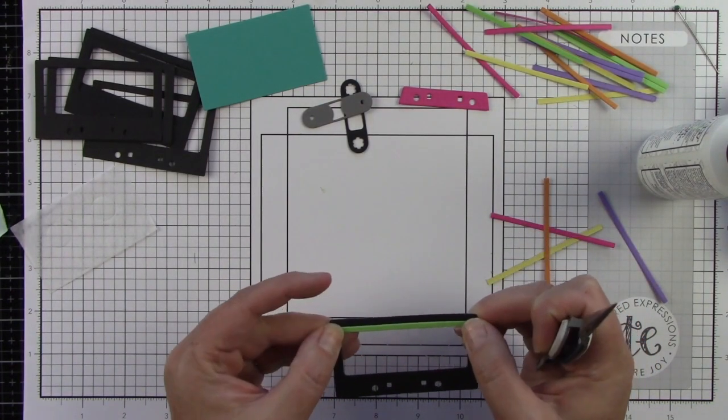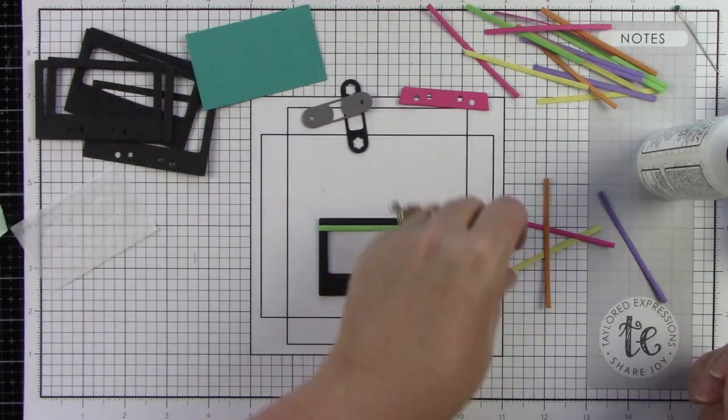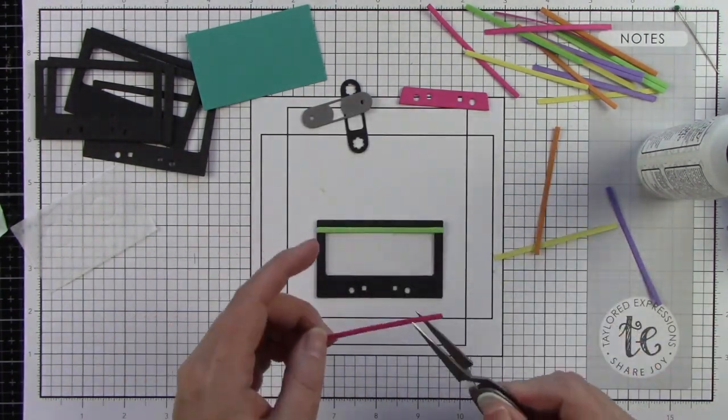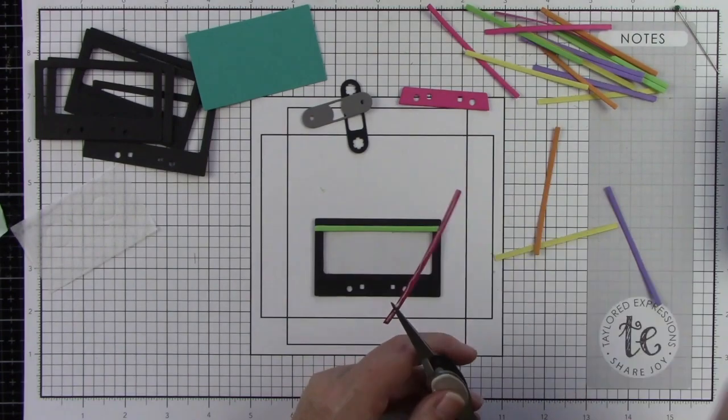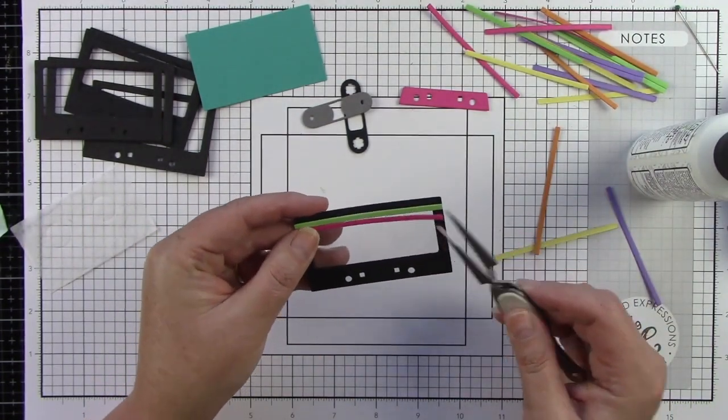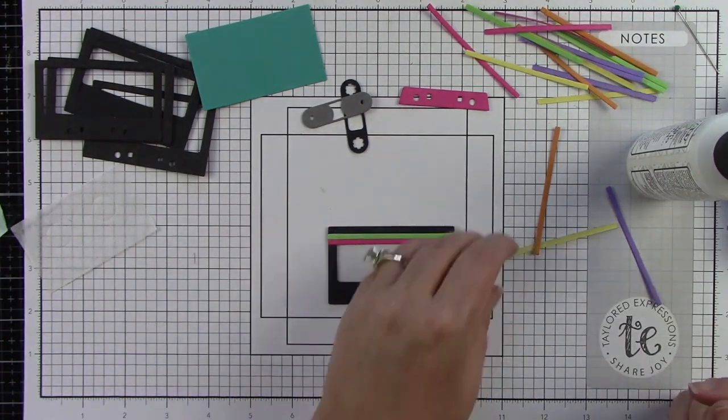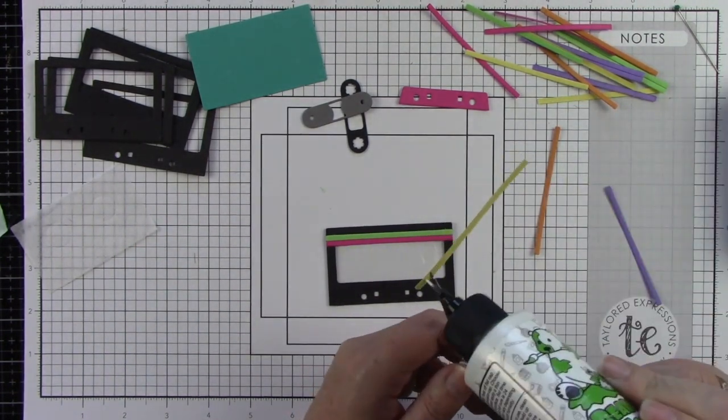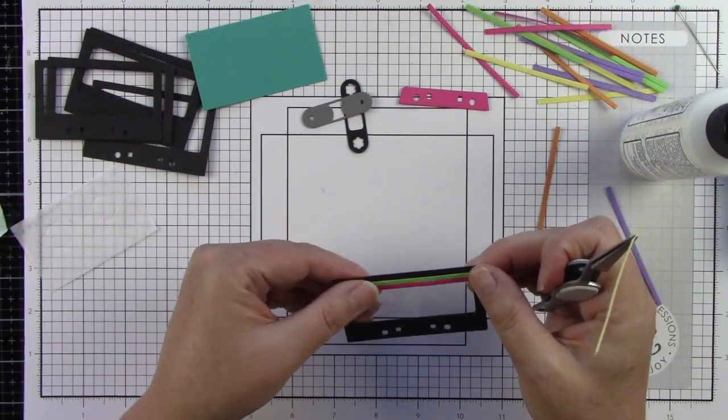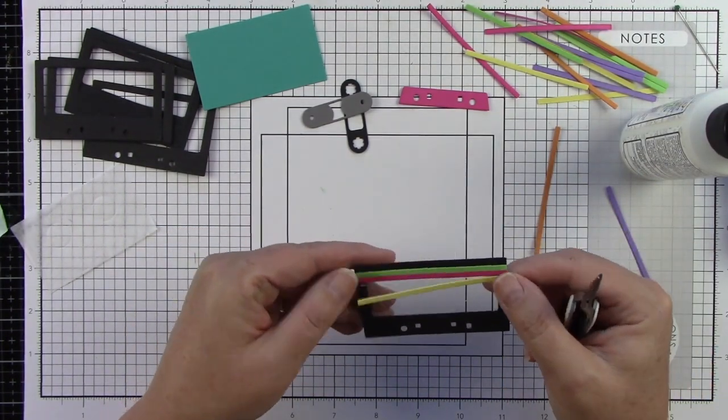The next color is the lollipop, just a little bit of liquid glue and lining that up making sure everything sticks. Then we have potato chip and I'm going to pop that right in place.